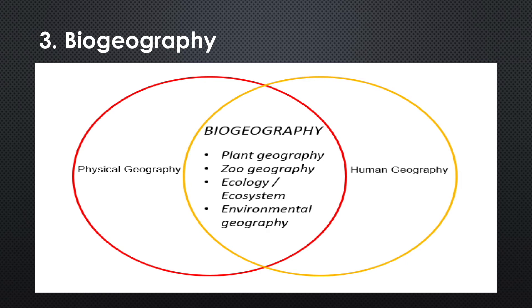The third branch is biogeography. The interface between physical geography and human geography has led to the development of biogeography, which includes plant geography, zoo geography, ecology, ecosystem and environmental geography. In plant geography, we study the spatial patterns of natural vegetation in their habitats. In zoo geography, we study the spatial patterns and geographical characteristics of animals and their habitats. Ecology deals with the scientific study of the habitats and characteristics of species. Environmental geography concerns itself with the world, leading to the realization of environmental concerns and issues.